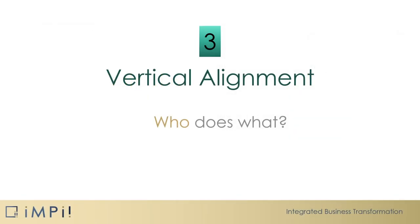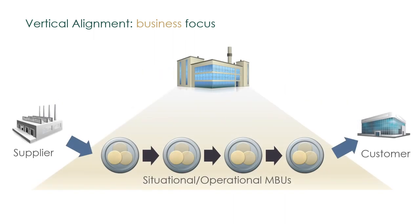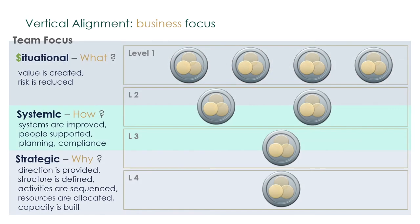Chapter 3: Vertical Alignment. Before we start, keep in mind the role of a leader: a leader's job is to help his people. In vertical alignment, the business focuses on ensuring that all MBUs, at all levels, operate harmoniously with the company's breakthrough — that is, strategic — objectives. The organisation is built onto three different layers, read from the bottom up. The first layer is the strategic one — it answers the question 'why do we do what we do?' The responsibility of top management is to provide direction, define structure, sequence activities, allocate resources, and build capacity.